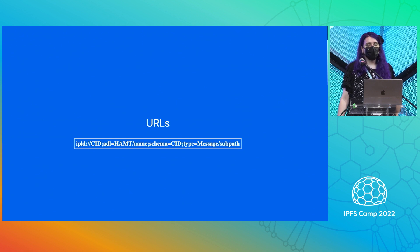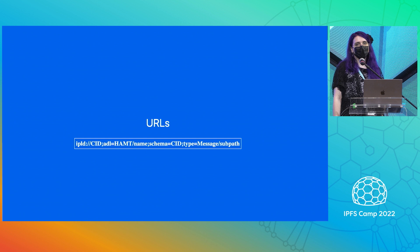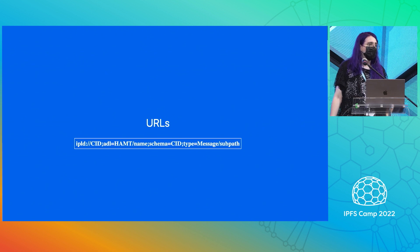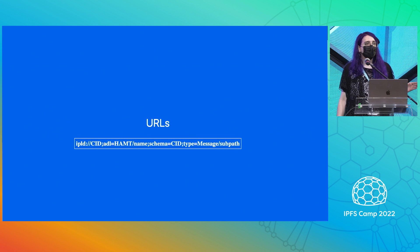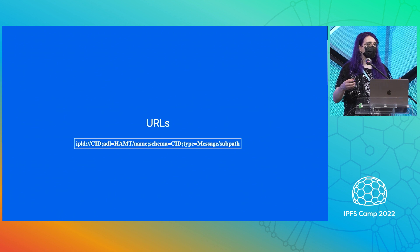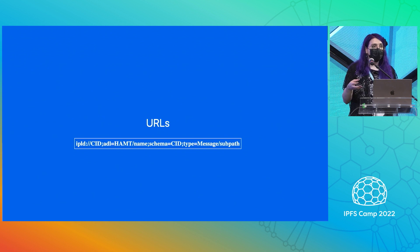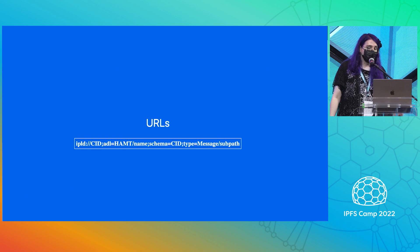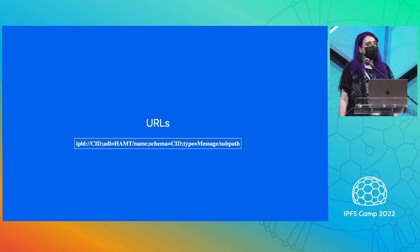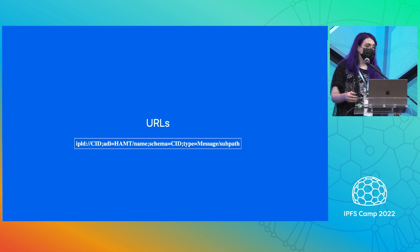I've been putting all of this together in a new spec called IPLD URLs. This is built on top of the URL specification you might be used to in website links, but it extends the origin and pathing to be able to apply lenses. So with this spec, you can specify that a given CID should be interpreted automatically with an ADL like a HAMT, or that at some point in your graph traversal you want to start applying a schema to automatically parse out representations. This gives you a declarative way to take advantage of all of IPLD's functionality without having to dig around between a bunch of different libraries.